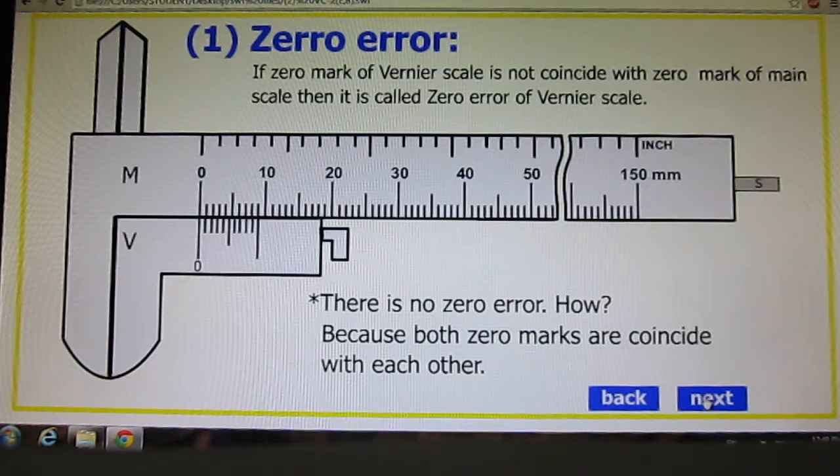First of all we will study zero error. If zero mark of Vernier scale does not coincide with zero mark of main scale then it is called zero error of Vernier Caliper.